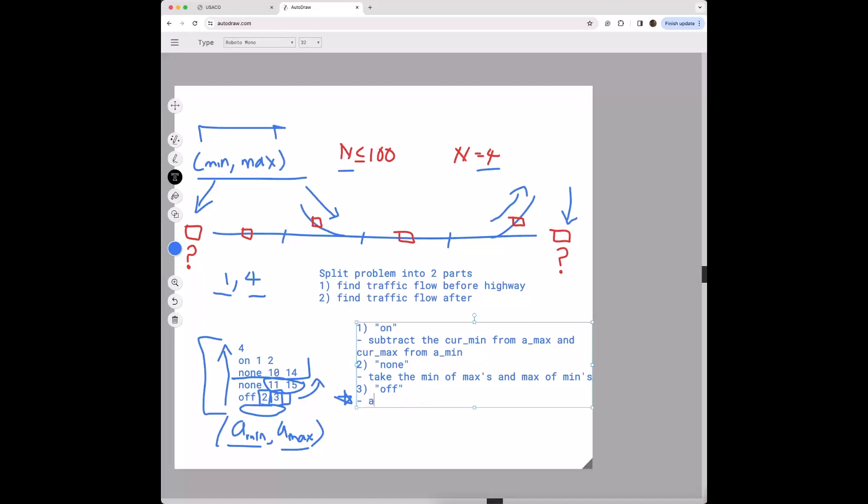So if it's off, add cur_min to a_min and cur_max to a_max. So this is basically I guess the procedures you follow for the first part of the problem. And I guess this is a pretty good, a pretty big hint for you to start solving the problem. But if you're still stuck after thinking about this for a little bit, then I'll go over the solution in the next video. Thank you.